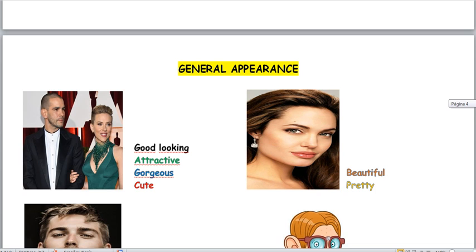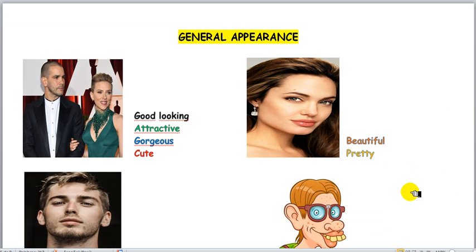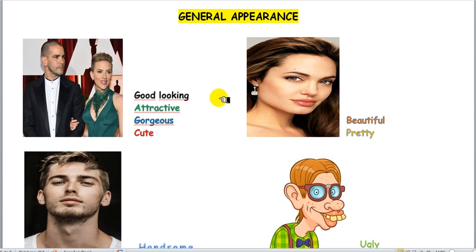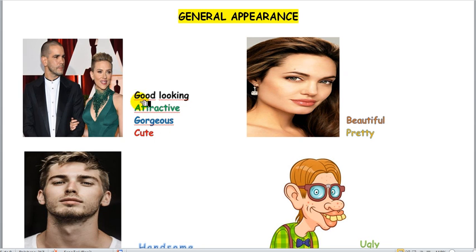Now let's go with the following phrases or adjectives, this time to describe general appearance. Many times we stick with certain words to say a person is attractive or beautiful. We have many adjectives we can use when we want to describe how attractive a person can be. But of course, that depends — as the saying goes, beauty is in the eye of the beholder. So, here we have different adjectives that mean almost the same: good-looking, attractive, gorgeous, and cute.